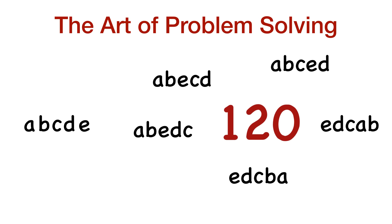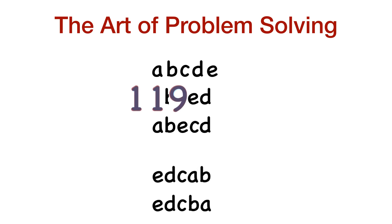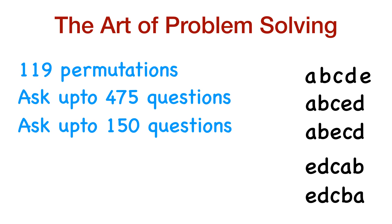What I'm going to do is remove one of the possible permutations from that list of 120, leaving 119 permutations. You know nothing about that list — all you know is there were initially 120 possible permutations for ABCDE, and I removed one. You don't know which one was removed — and that's the question. You have to ask up to 475 questions to figure out the missing permutation. And if you can do it in 475, the next task is doing it in just 150 questions.